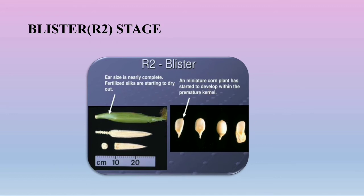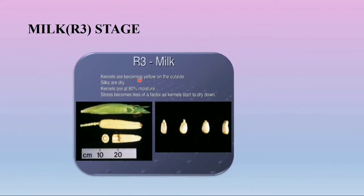Coming to the milk stage (R3): it occurs 18 to 22 days after silking. The kernel is yellow on the outside with a milky fluid inside — you can observe the milky fluid in the grain. Kernel growth is now due to cell expansion and starch accumulation. Corn borer and mites may reach economic thresholds at this stage.